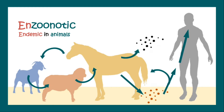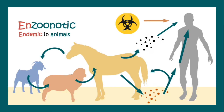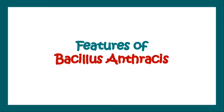Apart from that, the spores present on the hides, on farms, or in the body of animals can get inhaled by human beings and that can also cause disease. Sometimes, as a bioterrorism agent, Bacillus anthracis can be spread by humans, which can also contract the disease.